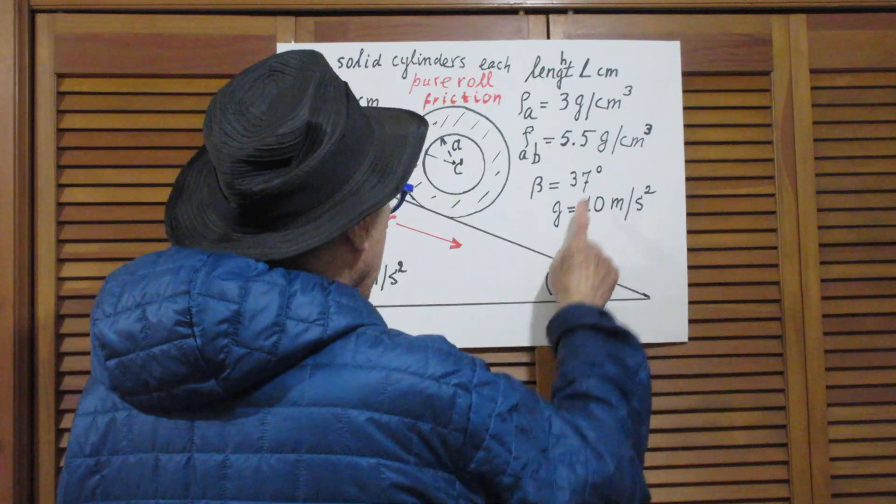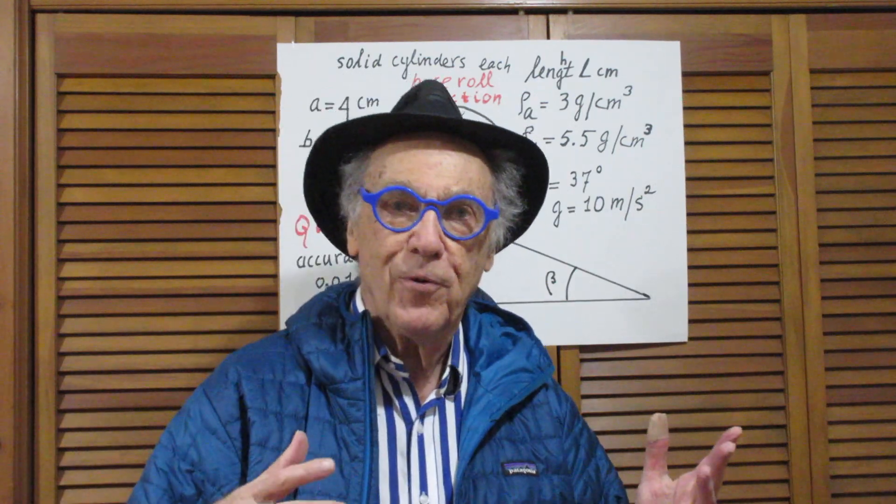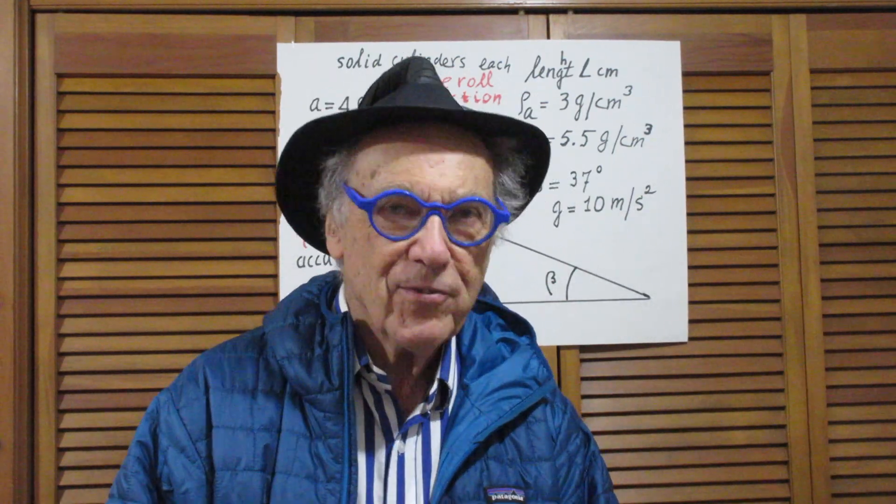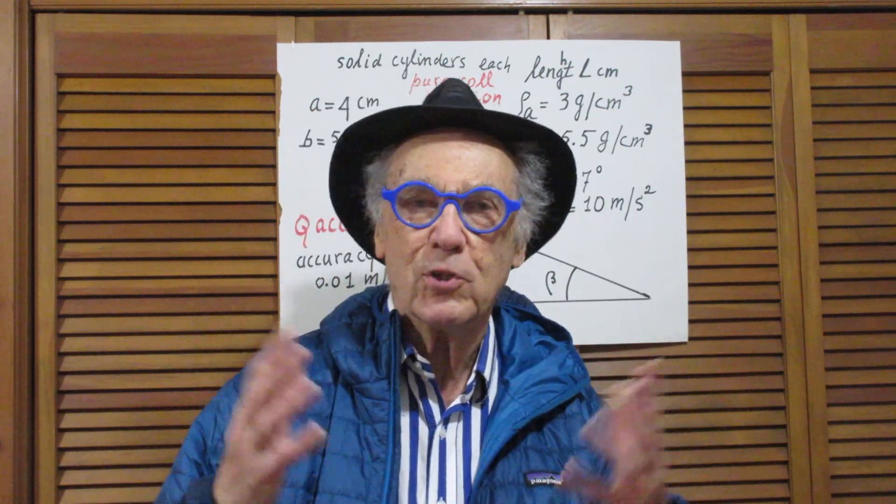And the angle beta is 37 degrees. And we will all assume, to make it a little easier for me to check your answers, that the gravitational acceleration is exactly 10 meters per second squared, just for simplicity.